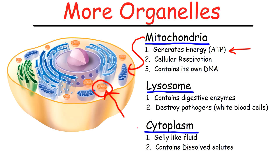Next up, we have the cytoplasm. The cytoplasm is basically the jelly-like fluid that is in the cell — all of the organelles are dissolved in the cytoplasm. The cytoplasm contains solutes like salts, electrolytes, and other stuff like carbohydrates, lipids, and free-floating ribosomes.